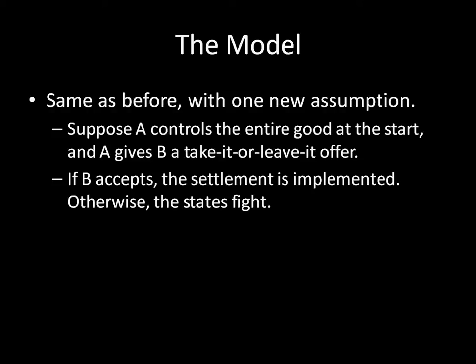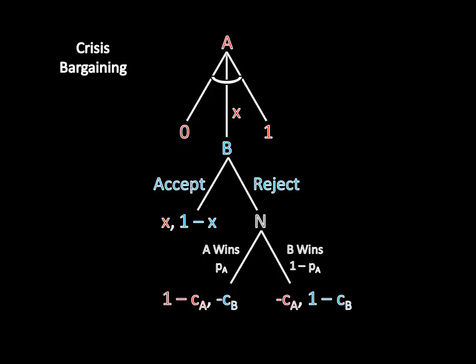So if B accepts that offer, then the settlement is implemented, the new border is essentially drawn. And if B rejects, then the states fight a war just as they have before. So the way we can look at this in a game theoretical model is by drawing a diagram that looks like this.